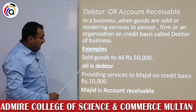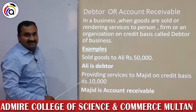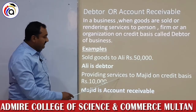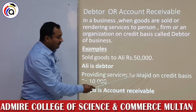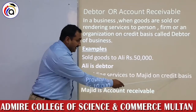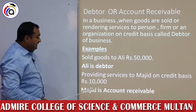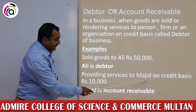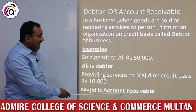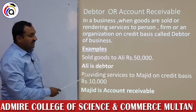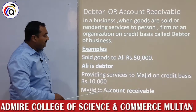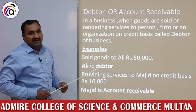نیچے جو ہماری second example ہے وہ services business کی ہے۔ ہم نے services دی ہیں Majid کو، credit basis پر۔ تو students، یہاں جو شخص Majid ہے وہ ہمارا account receivable سمجھا جائے گا۔ Account receivable یا debtor — دونوں کا مطلب ہے کہ ان سے پیسہ ہم نے بعد میں وصول کرنا ہے۔